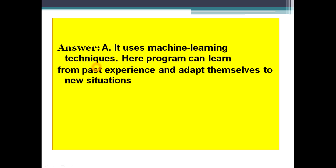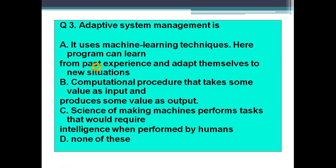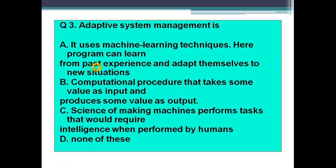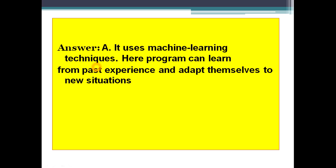The answer is Option A — it uses machine learning techniques, and programs can learn from past experience and adapt themselves to new situations. That is adaptive system management. Here it tries to adapt to new situations on the basis of past experience. If you have any doubt, the comment section is open.